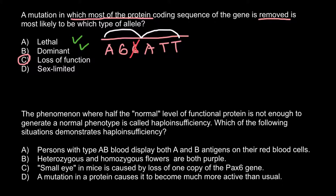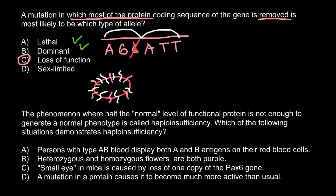And now the next question. The phenomenon where half the normal level of functional protein is not enough to generate a normal phenotype is called haploinsufficiency. Which of the following situations demonstrates haploinsufficiency? Here are four answers to choose from. Answer A: persons with type AB blood display both A and B antigens on their red blood cells.